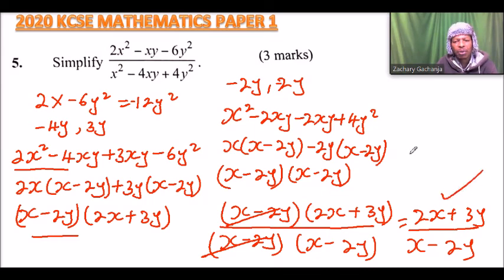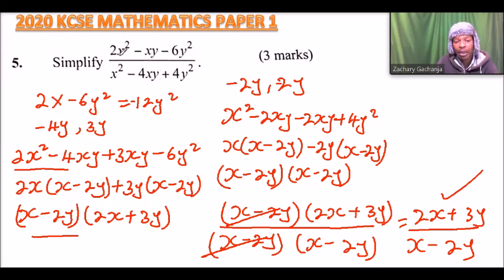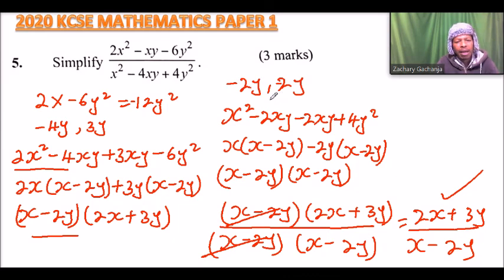That is the answer, and that is how you work out this kind of question. The important thing here is to know that when you have two unknowns, x and y, you need to consider one as a constant so that you are able to factorize the quadratic expressions and simplify.